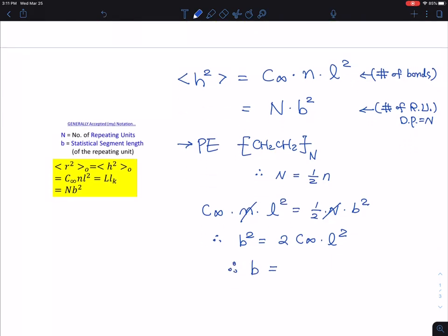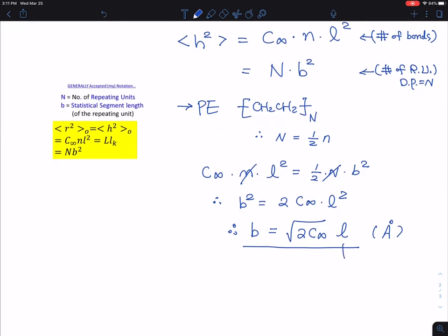So this one goes away, and therefore, you ended up having b square is two times C infinity times L square. And so therefore, your statistical segment length is nothing but, for the case of polyethylene, and this is just changing the value of the bond into some other length scale. You know, it's something like a fictitious value as it is. So we can calculate that, given that this is based on the 1.54 angstrom carbon-carbon bond length. You guys can calculate the b, putting the different values of characteristic ratio at different kinds.